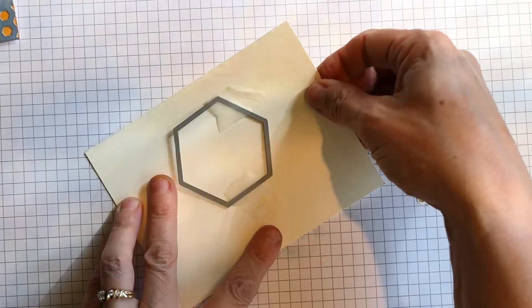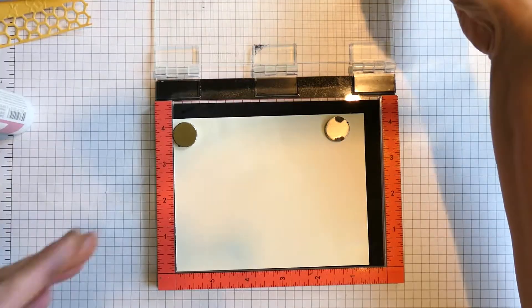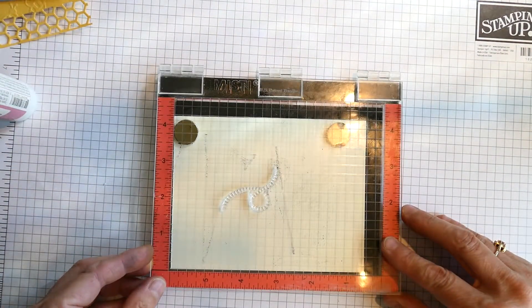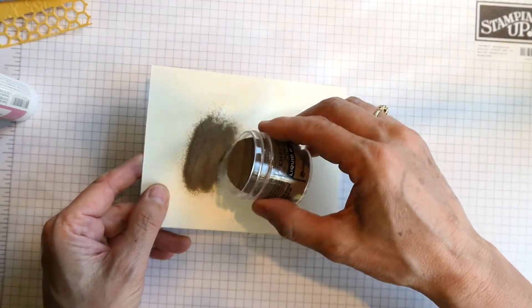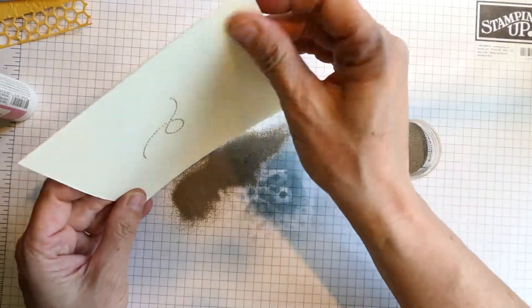Next it was time to stamp the inside of the card, so I folded it back and ran the little bee trail through the MISTI. I used Platinum embossing powder, and it gave a really nice shine. It wasn't silver and it wasn't gold, just a beautiful embossing powder.